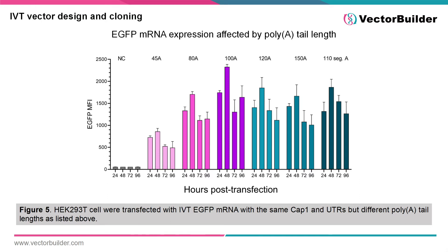Poly-A tails are extremely important for regulating expression and stability of your mRNA transcript in vitro and in vivo. As seen in Figure 5, in a GFP reporter assay of mRNAs with the same cap structure and UTRs but different length poly-A tails, both the 45- and 80-nucleotide tails were not sufficient for maximal GFP expression compared to a 100-nucleotide tail. Although 120- and 150-nucleotide tails may confer enhanced expression to certain transcripts in different applications, in this setting the 100-nucleotide tail performed best.